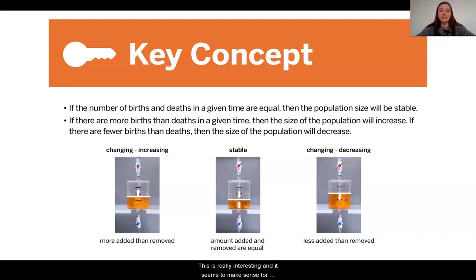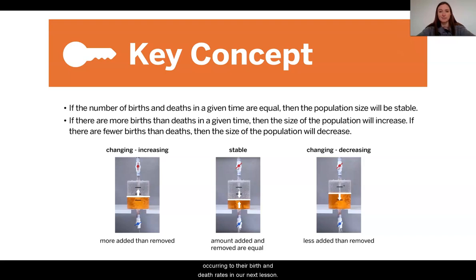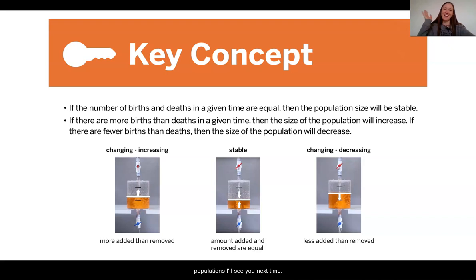If there are fewer births than deaths, then the size of the population will decrease, just like in our video where the water level was changing when the bottom valve was open but the top was closed. This is really interesting and it seems to make sense for what might be occurring in the moon jelly populations. Now we know that moon jelly populations are increasing, and we're going to be looking for evidence for what might be occurring to their birth and death rates in our next lesson. I'm really excited to continue collecting evidence with you — I'll see you next time. Bye!